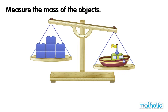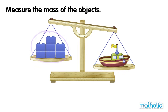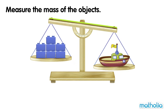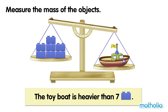On one side of the balance there are seven blocks. On the other side there is a toy boat. The balance is not level. The toy boat is heavier than seven blocks.